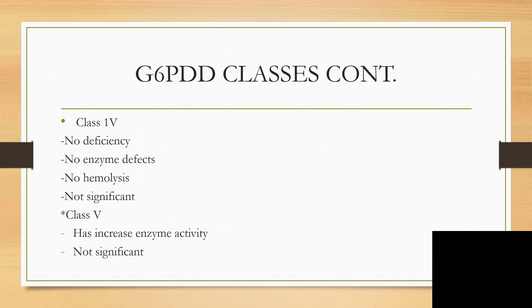In Class 4, there is no deficiency, no enzyme defects, and no hemolysis — and you may ask why classify them; it is not clinically significant. In Class 5, we actually have increased enzyme activity, and it is not significant either.